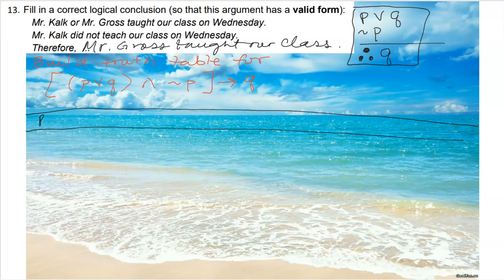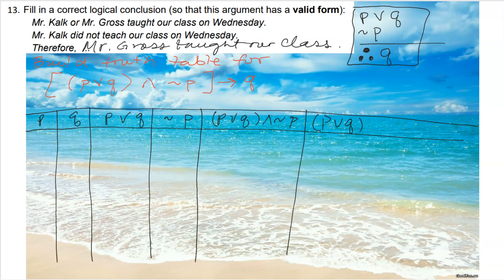P and Q are your two simple statements, so you have P, you have Q, and then we would want to do P or Q and then next we would say not P because that's the order of which we are operating. And then we will say P or Q and not P, and then lastly we would say P or Q and not P then Q.